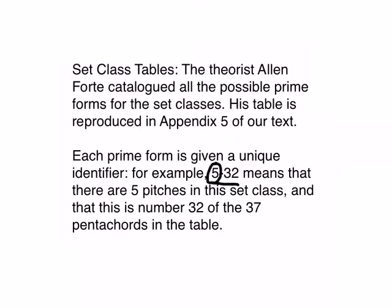The 5 means that there are 5 pitches in the set. And the number 32 means that out of the 37 possible pentachords in the table, this one is the 32nd of the chart. In general, the lower the index number, that's the 2nd number, the more compact the intervals are compared to the other 5-note sets. We'll be talking more about how to use these set class tables and what they all mean in the next video, but that's all for this.